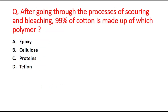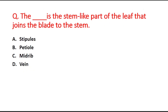Next question: after going through the processes of scouring and bleaching, 99 percent of cotton is made up of which polymer? Option A is epoxy, option B is cellulose, option C is protein, and option D is Teflon. The right answer is option B, cellulose.